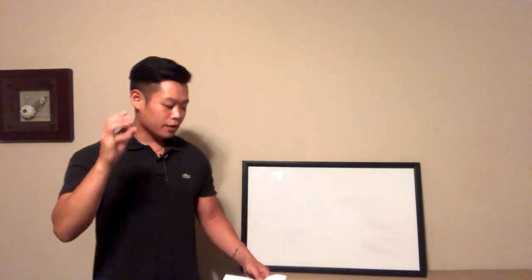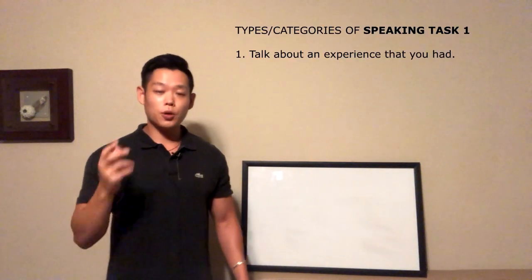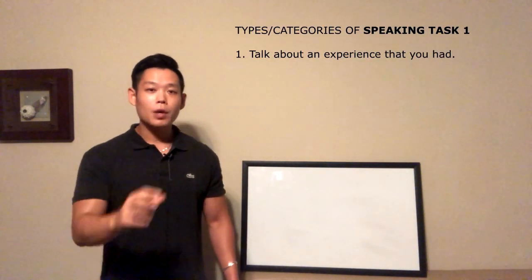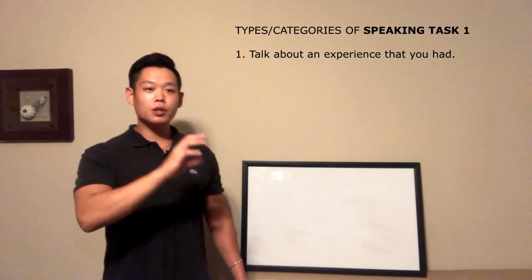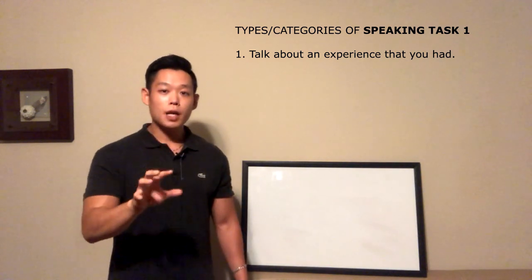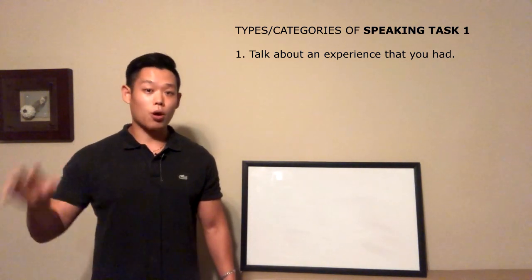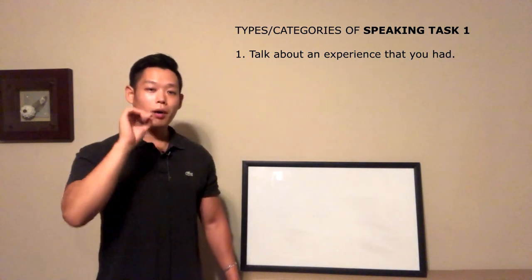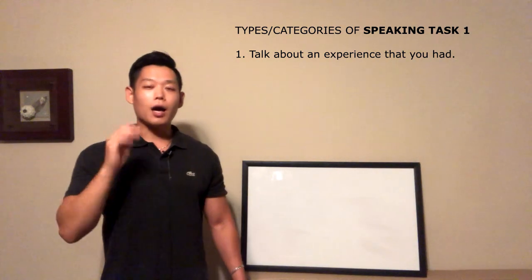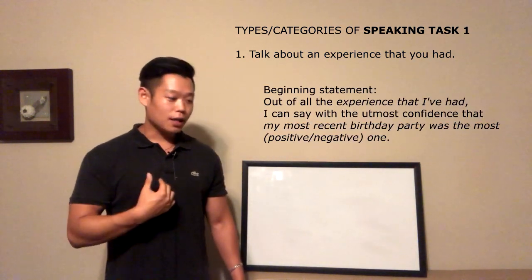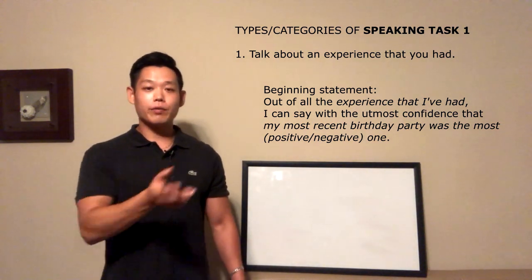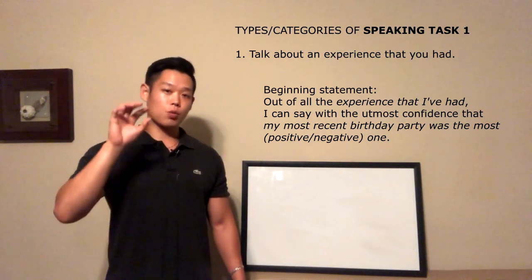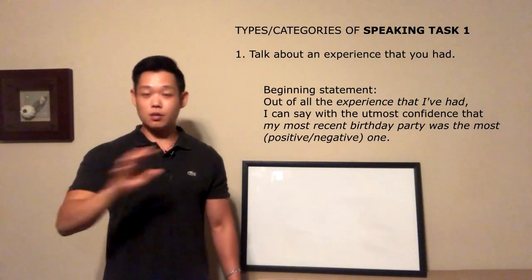The first category of Task 1 speaking questions is 'talk about a personal experience that you had.' This experience is either going to be positive or negative. For most general questions of this type, you should use 'my most recent birthday party' as your opinion. For a positive experience, your beginning sentence would be: 'Out of all the experiences that I've had, I can say with the utmost confidence that my most recent birthday party was the most positive one.'